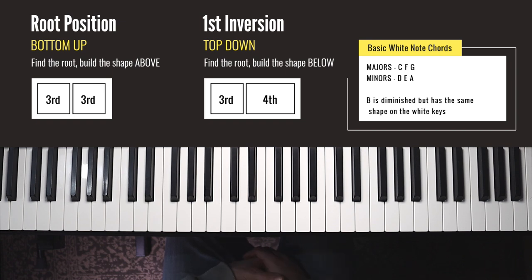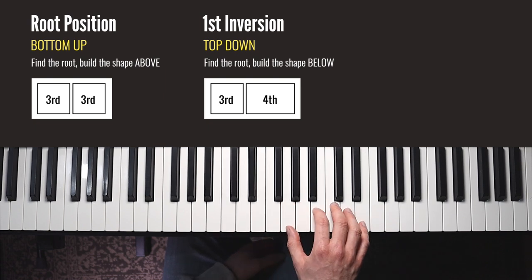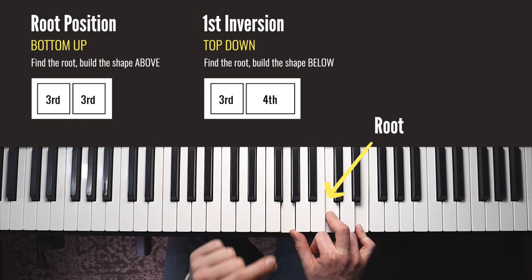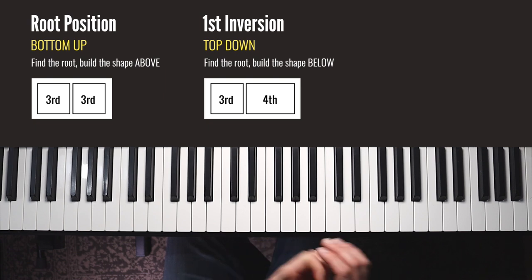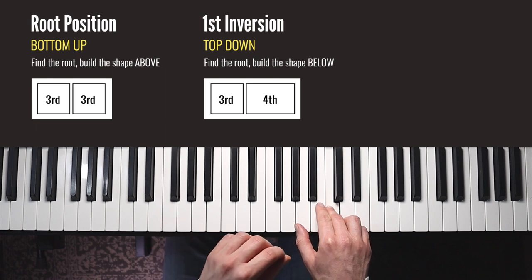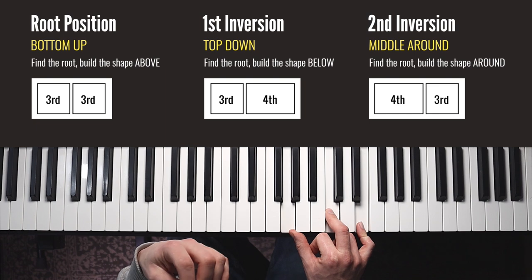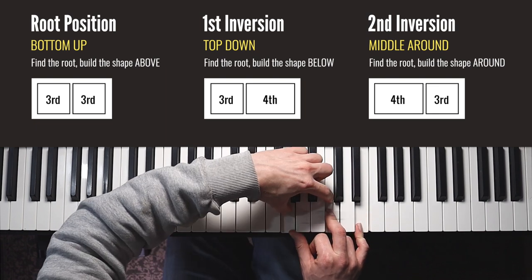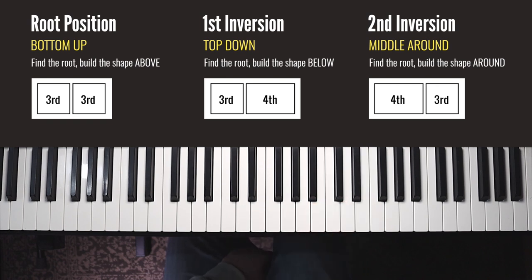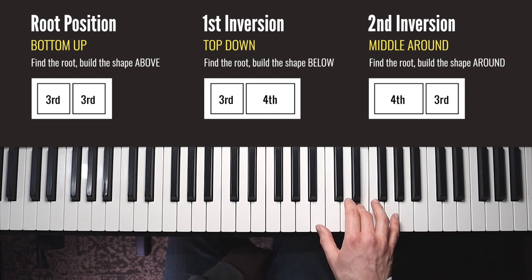Let's repeat exactly the same idea and method for second inversion shapes. If we run through C again — root position, first inversion, second inversion — now the root is in the middle. We want to keep track of the root; that's the most important thing to do. We can find any second inversion shape now by locating the root, in this case C, and then building the shape around. I like to call this one the middle-around shape. This shape is back to front to the first inversion shape — we now have the larger gap of a fourth on the bottom and the smaller gap of a third on the top. Practice that exactly the same way: find any random note as your middle note and build the shape around.